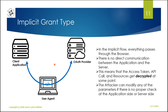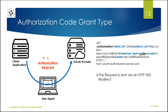They improved the implicit type, which is also called implicit because the client implicitly trusts the OAuth provider through the user agent. To enhance this flow, they developed the authorization code grant type, which adds an extra layer on top. There is also a direct communication between the client application and the OAuth provider in this second implementation. Let's look at the authorization code grant type.